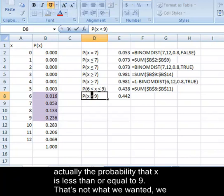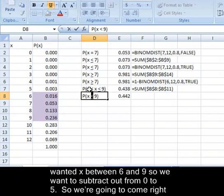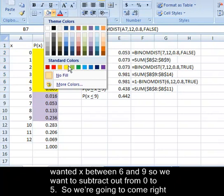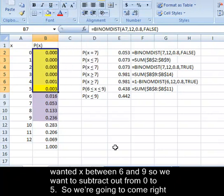That's not what we wanted. We wanted x between six and nine. So we want to subtract out from zero to five.